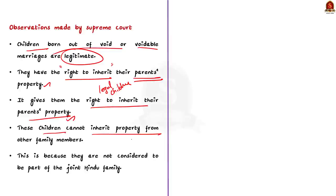At the same time, the Supreme Court said that these children cannot inherit property from other family members. This is because they are not considered to be part of the joint Hindu family. So this is the observation made by the Supreme Court with regard to inheritance of property by children of void or voidable marriages.